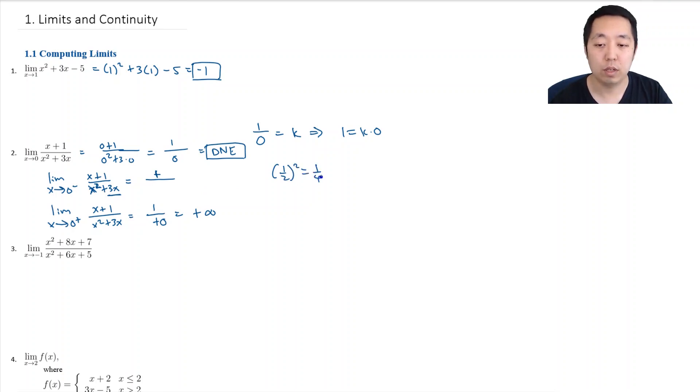Like if I square 1 half, it becomes 1 fourth. And 1 fourth is smaller than 1 half. Or if I square 1 third, it's 1 ninth. 1 ninth is smaller than 1 third. So when I square whatever tiny number I put in here, it's positive but it's smaller than this one here. So really the denominator is going to be negative here. And so this whole result is going to be the number 1 divided by a tiny, tiny negative number is going to be a really big negative number. And because these two limits are different, we simply write the answer as it does not exist.